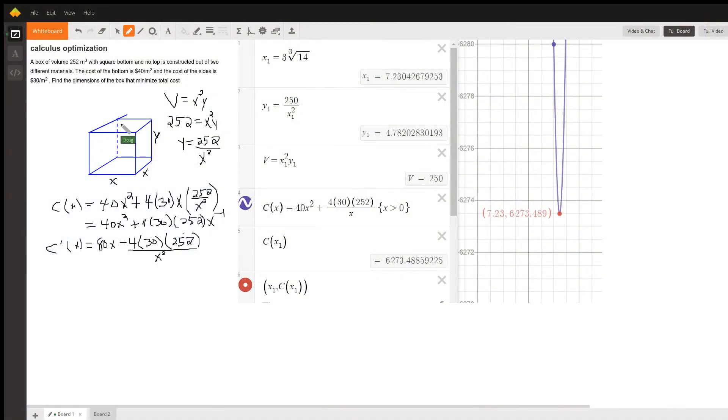Here we go. Here's sort of what the box looks like. It's got an open top, so this top isn't here, but the base is square, which means each side is x, or we could represent it with the letter x.